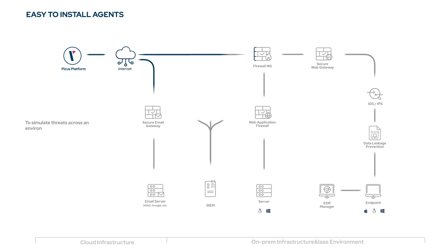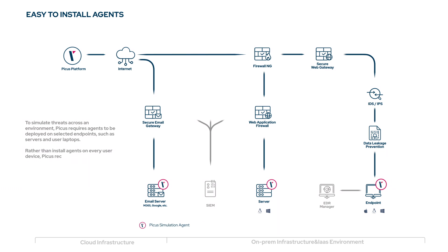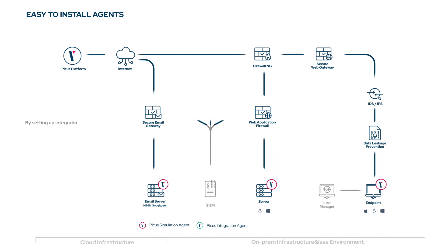To simulate threats across an environment, PICAS requires agents to be deployed on selected endpoints such as servers and user laptops. Rather than installing agents on every user device, PICAS recommends that agents are installed on only one instance of a device that shares a golden image with other devices. By setting up integration agents on your SIEM and EDR solutions, PICAS security control validation also validates threat detection capabilities.